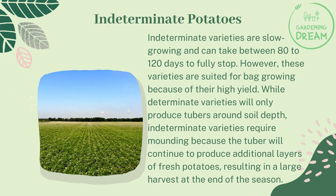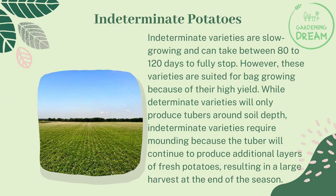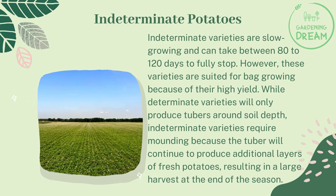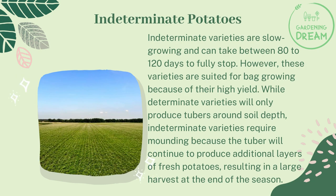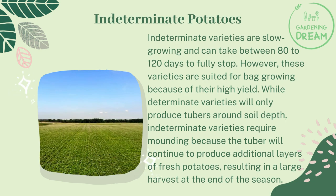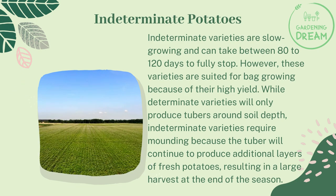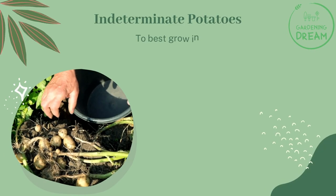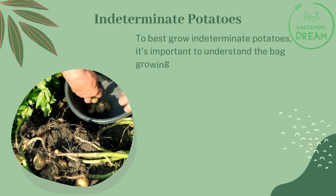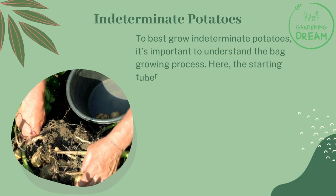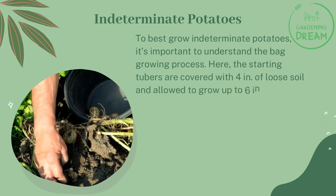Indeterminate varieties are slow growing and can take between 80 to 120 days to fully stop. However, these varieties are suited for bag growing because of their high yield. While determinate varieties will only produce tubers around soil depth, indeterminate varieties require mounding because the tuber will continue to produce additional layers of fresh potatoes, resulting in a large harvest at the end of the season. To best grow indeterminate potatoes, it's important to understand the bag growing process.